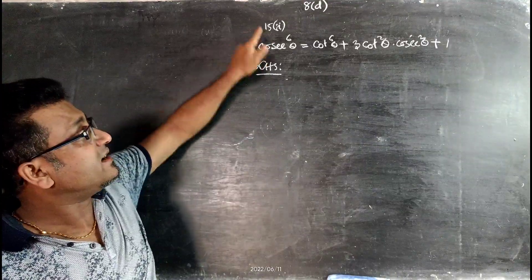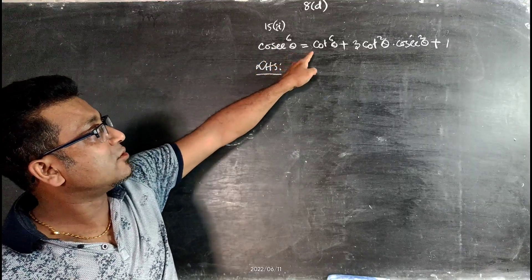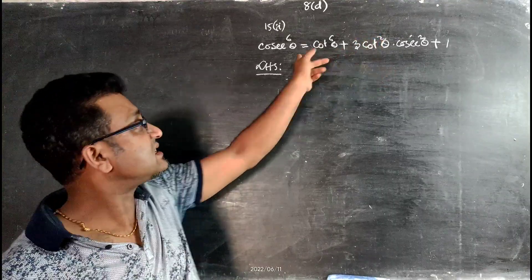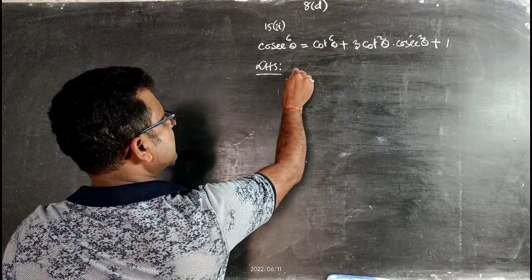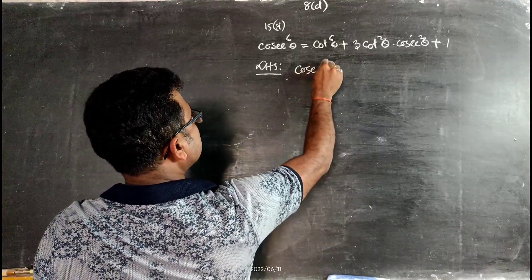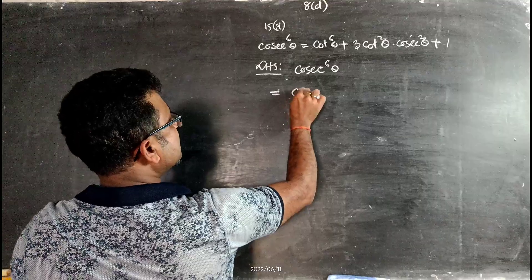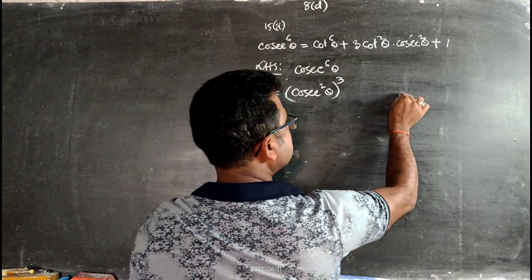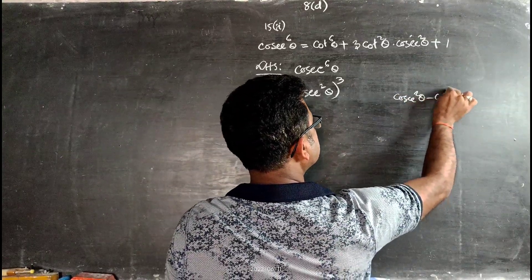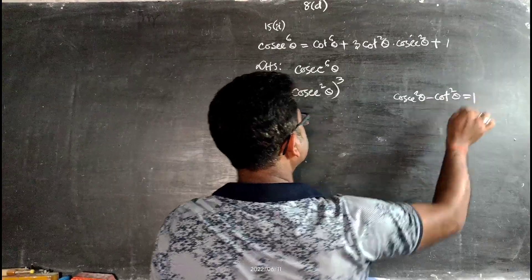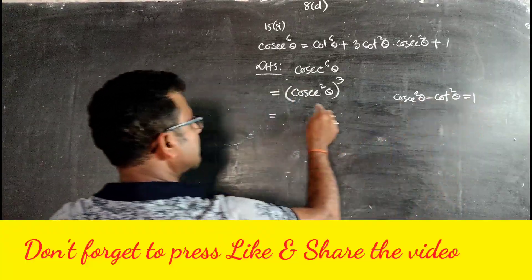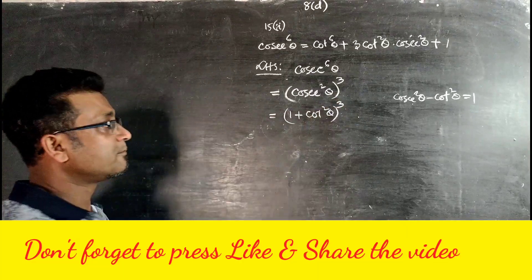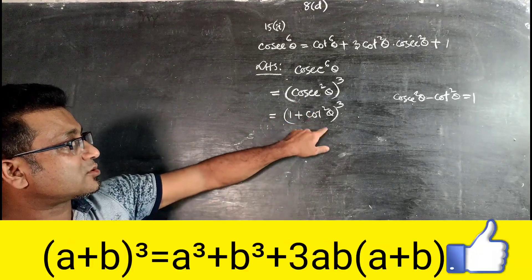Second part of question number 15: prove cosec⁶θ = cot⁶θ + 3cot²θcosec²θ + 1. Just like the previous sum, start from the left hand side. Write cosec⁶θ as (cosec²θ)³. We know cosec²θ - cot²θ = 1, so cosec²θ = 1 + cot²θ. It becomes (1 + cot²θ)³.